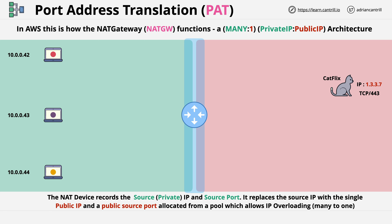In this case, CatFlix uses the destination port of 443. The source port is randomly assigned by the client, so as long as the source port is always unique, many private clients can use the same public IP. Let's assume that the public IP address of this NAT device is 52.95.36.67.